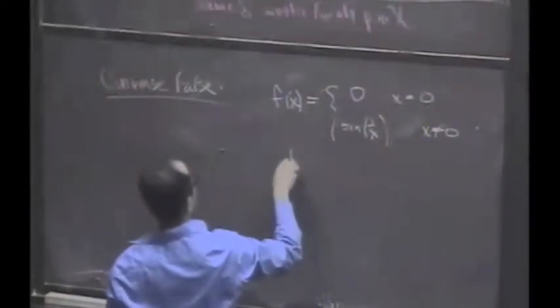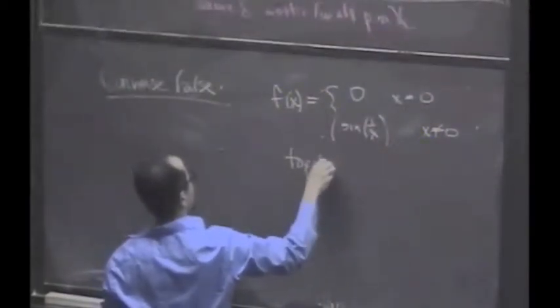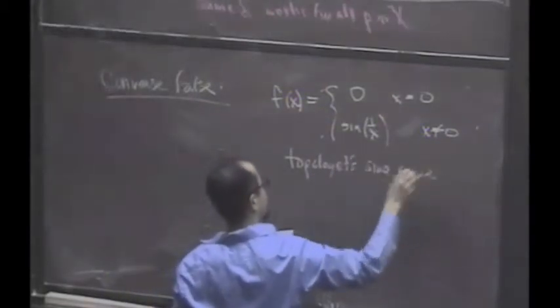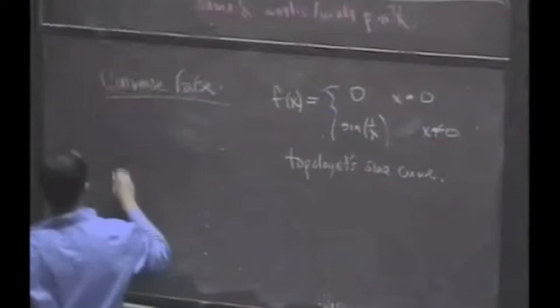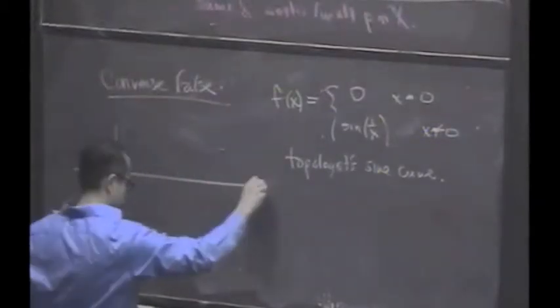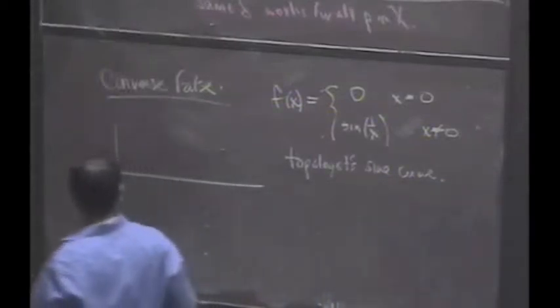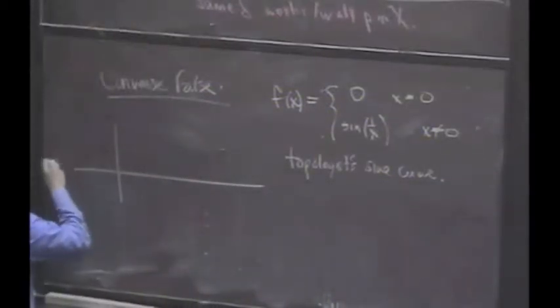This has a special name. It's called the topologist sine curve. It's a source of a lot of headaches in analysis, or actually a source of a lot of interest. If you want to test things out, this is a good one. Here we go.